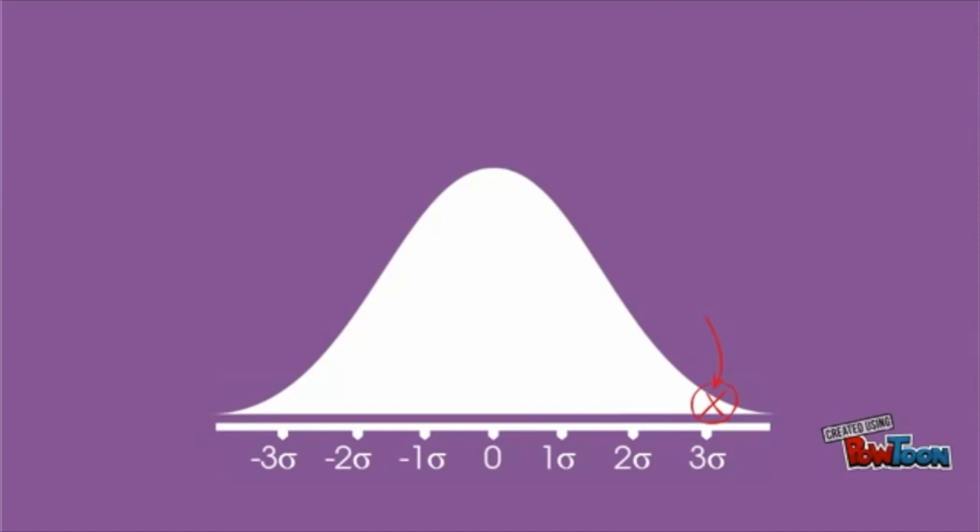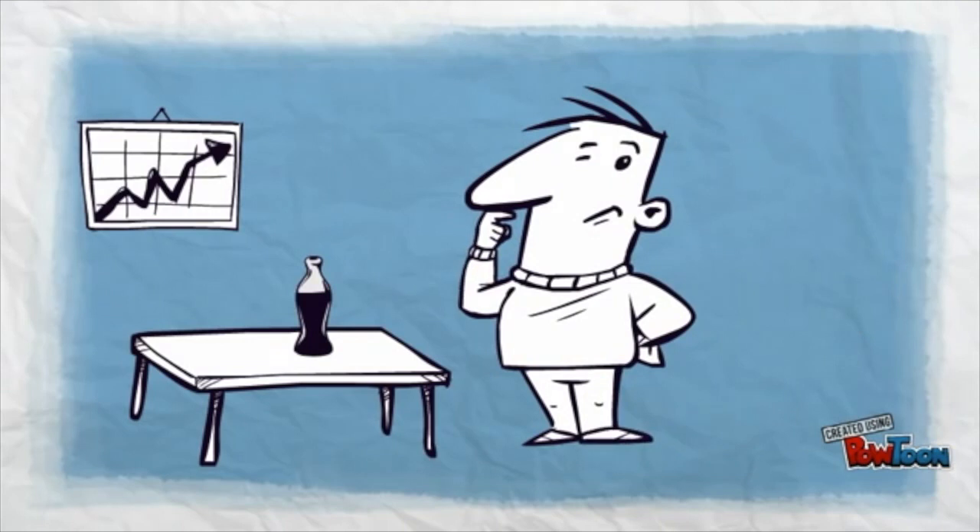When census data cannot be collected, statisticians collect data by developing specific experiment designs and survey samples. For instance, they will ask a hundred or a thousand people a question and then base their results as if the entire country has voted on this.